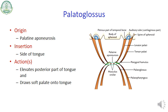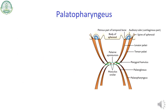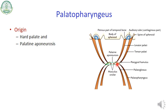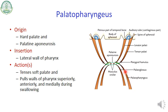The palatoglossal muscle elevates the posterior part of the tongue and draws the soft palate onto the tongue. The fourth pair, palatopharyngeus, arises from the palatine aponeurosis and some portion of the hard palate, with insertion into the lateral wall of the pharynx. Its action is to tense the soft palate and pull the wall of the pharynx superiorly, anteriorly, and medially during swallowing.